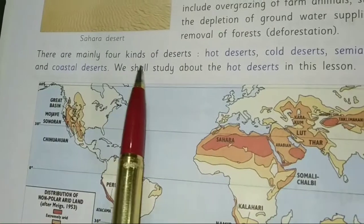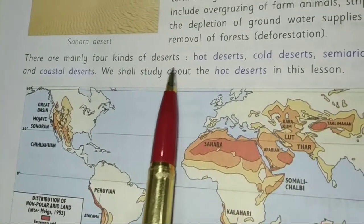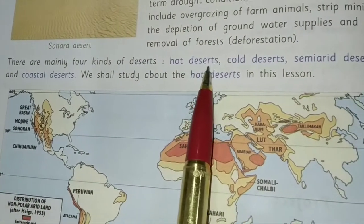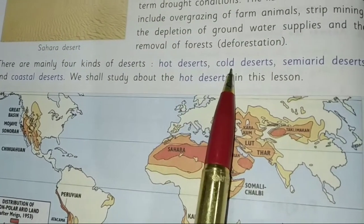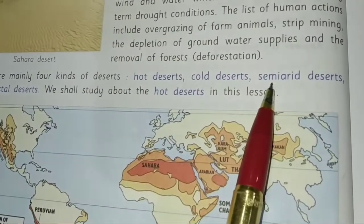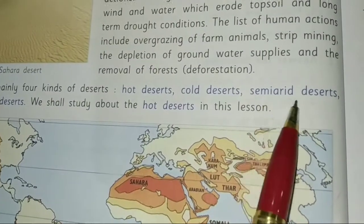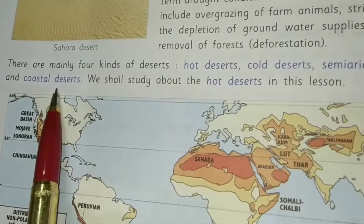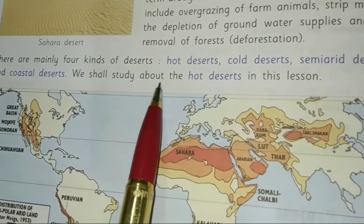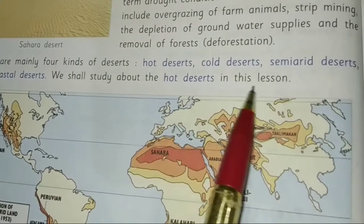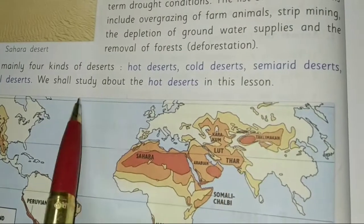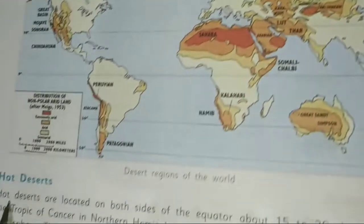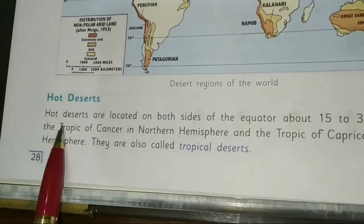There are mainly four kinds of deserts: Hot desert, Cold desert, Semi-arid desert, and Coastal desert. In this lesson we shall study the hot desert.